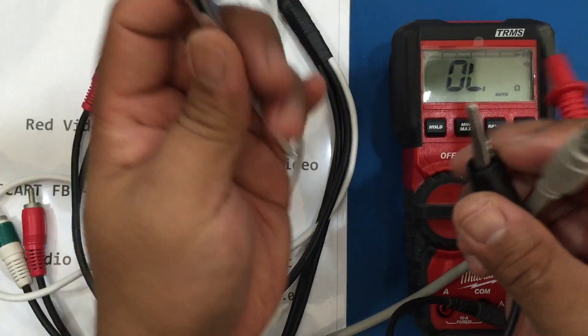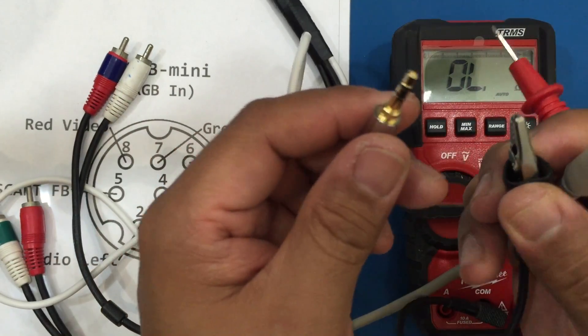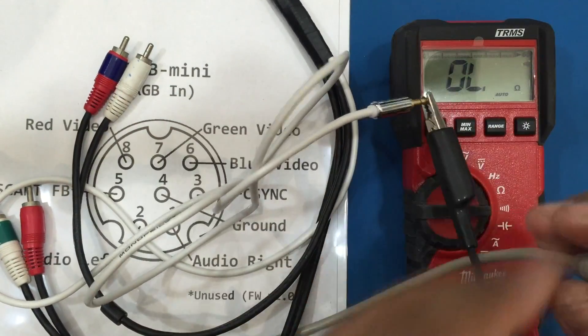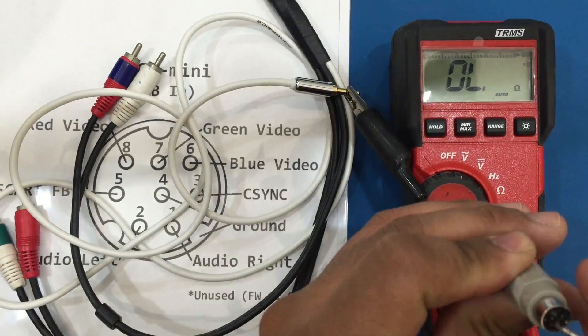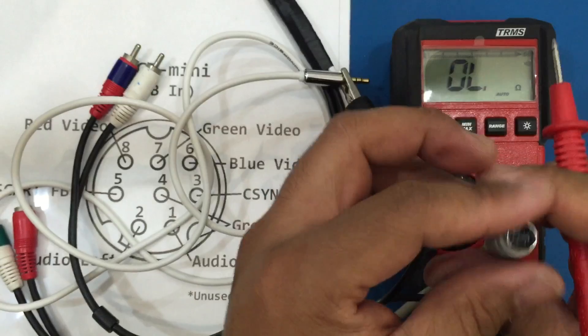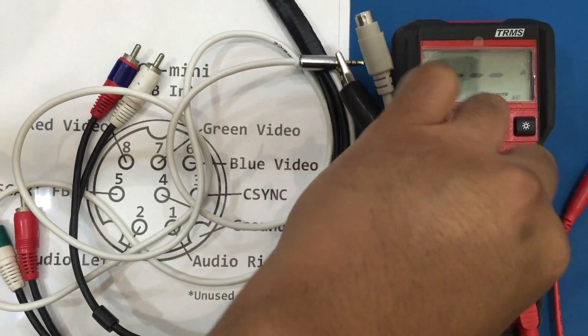Sync is pin 3. I'm gonna check the audio jack. The tip on the TRS is the left audio. Ring is right audio. And sleeve is ground. Okay everything checks out.